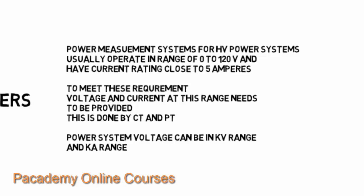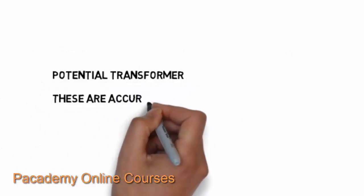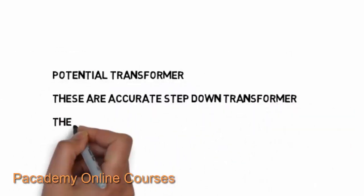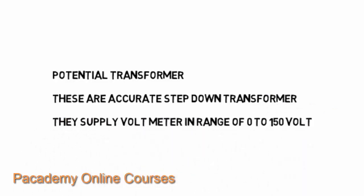This is done by current transformers and potential transformers. The power system voltage can be in the kilovolt range and kilo ampere range, and it is not possible for measurement equipment to sustain such levels of current and voltage. So the equipment is usually small and needs a low voltage input, and to do that you have the potential transformer.